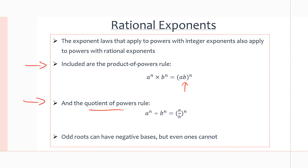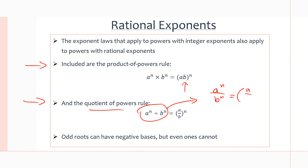For the quotient of powers rule: if we have a to the exponent n divided by b to the same exponent n, we can join the bases and say this equals a divided by b, all in brackets, raised to the power of n. Going backwards, a over b in brackets raised to the n equals a to the n over b to the n — which is the fraction form that may be easier to understand.